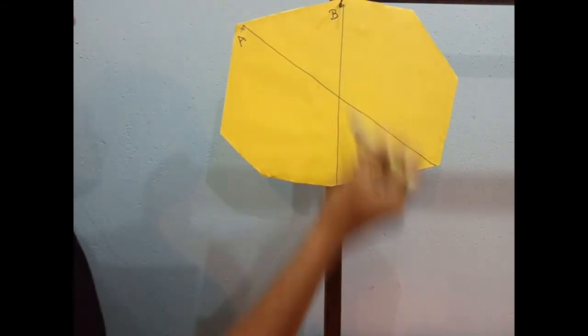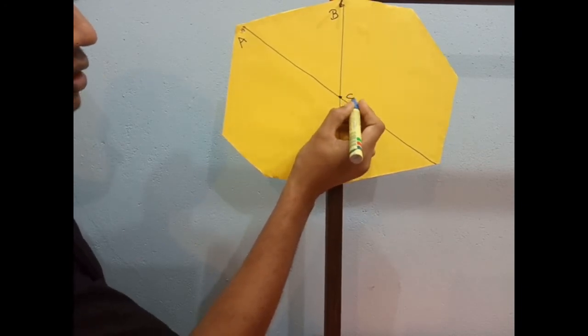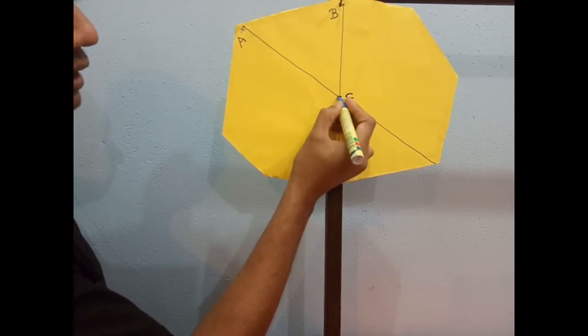So here, the point where the lines intersect is the center of mass or center of gravity.